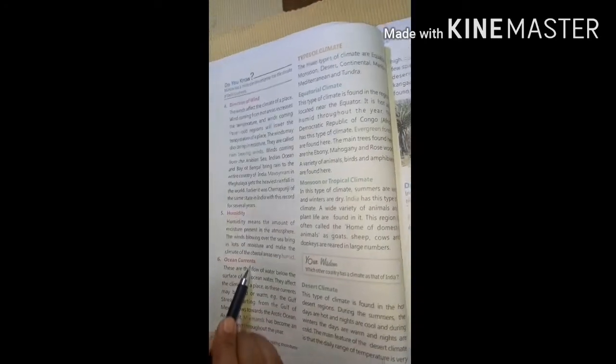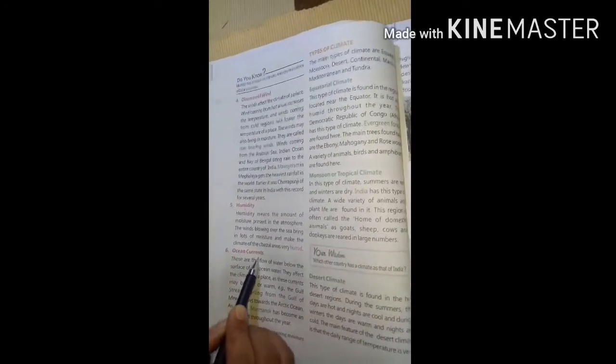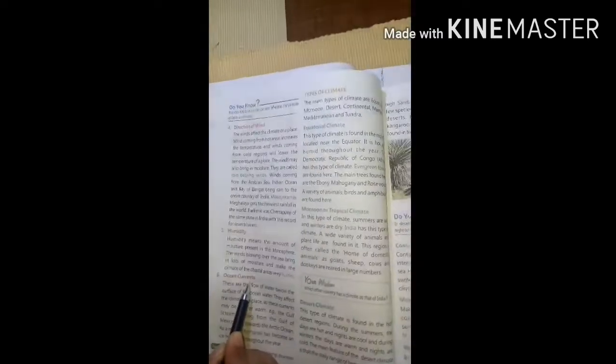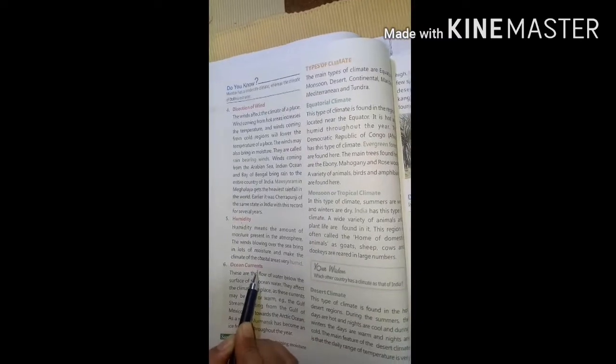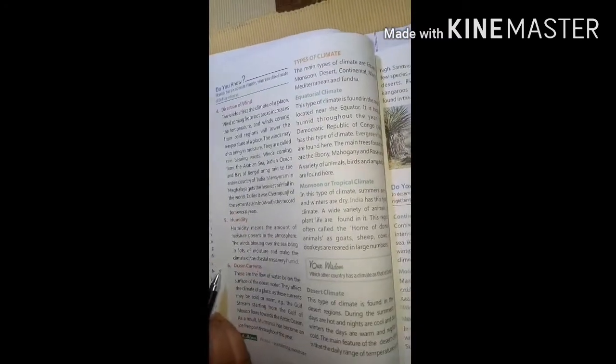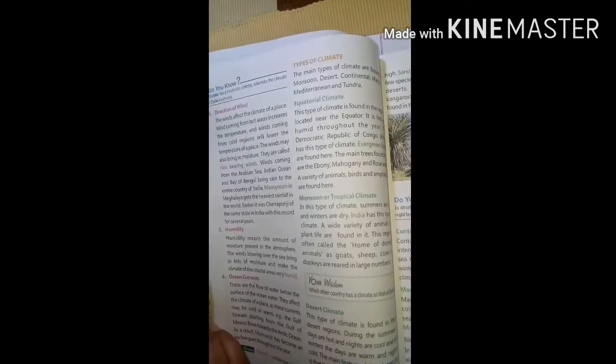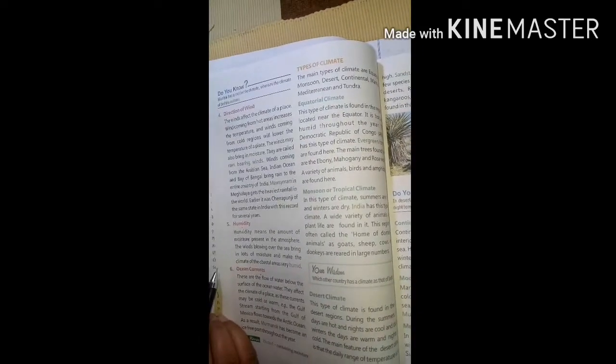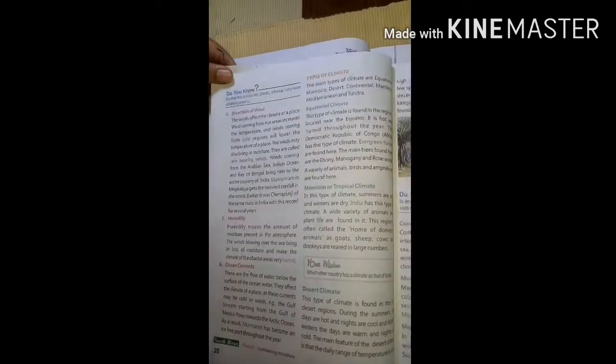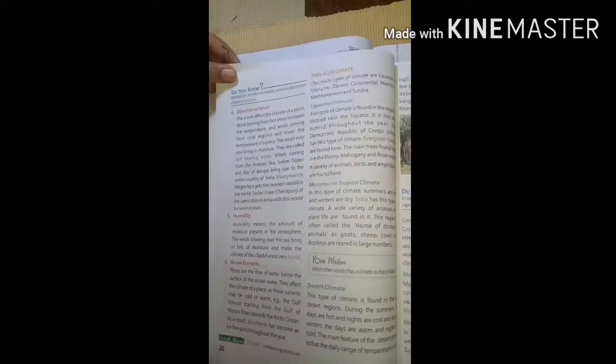Last we have is the ocean currents. These ocean currents can be cold as well as warm. These are the flow of water below the surface of the ocean. They affect the climate of a place as these currents may be cold and warm. So, these are some of the factors which affects the climate of a particular place.